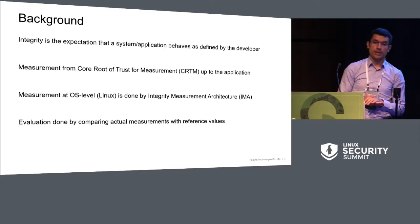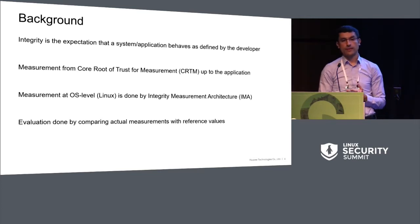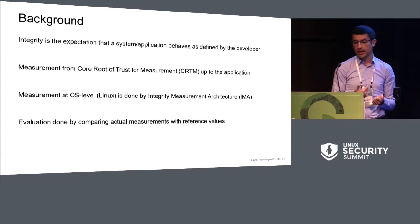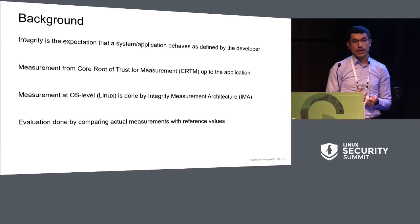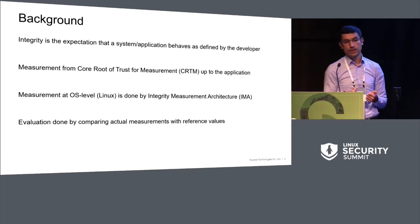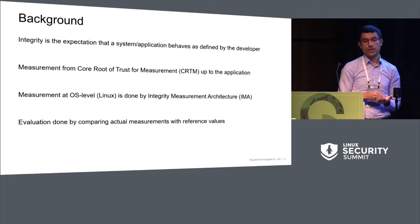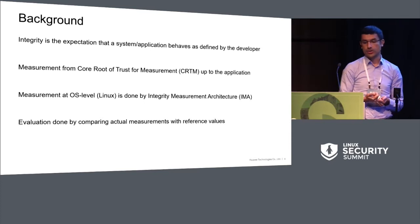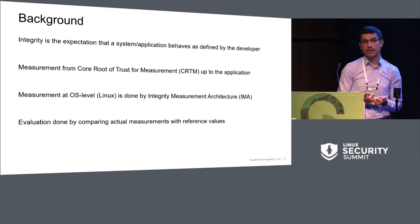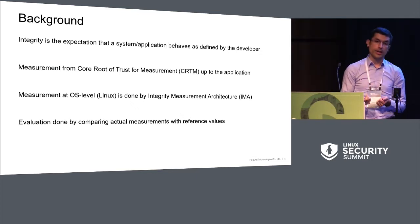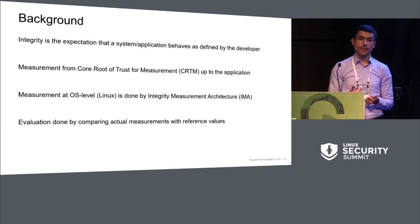In trusted computing, integrity is the process of evaluating whether a system or application behaves as intended by the software developer. The measurement starts from the core root of trust of measurement, which is usually in the CPU, and the measurement process is done until the application. At the operating system level, the measurement is done by integrity measurement architecture. The evaluation is done by comparing actual measurement with reference measurement.